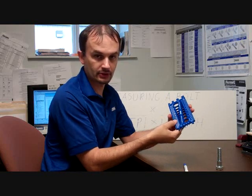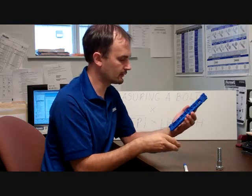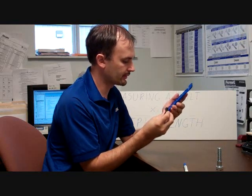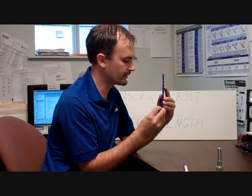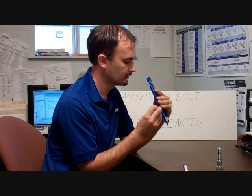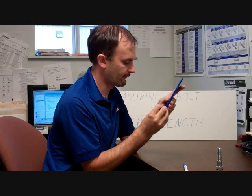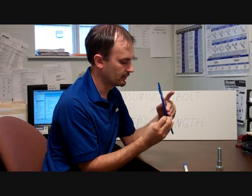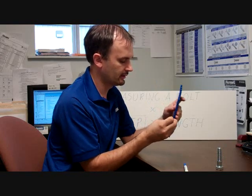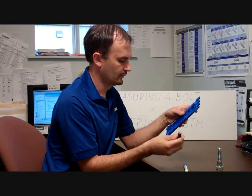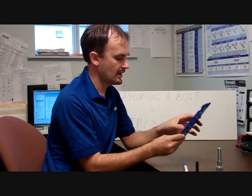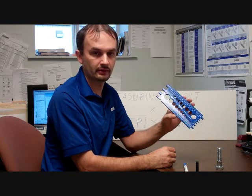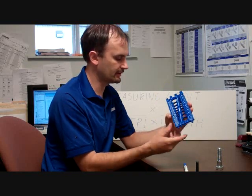We need our threads per inch. Next, we're going to flip the gauge over. We are going to try to match this up. We are trying the 16 threads per inch. That doesn't work. We try 14. That doesn't work. We match it up perfectly with the 13 threads per inch. So we now have a 1/2 inch diameter bolt with 13 threads per inch or TPI.